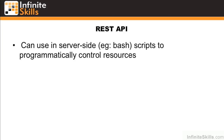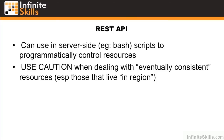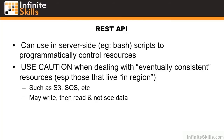You can use the REST API in server-side bash scripts to programmatically control resources. For example, you could spin up assets at a certain time of day simply by firing off an API call. When dealing with eventually consistent resources such as S3 and SQS, or those that live in the region, be particularly careful — you may write and then read and not see the data, or you may delete and then still see the data.